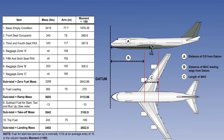We have looked at calculating the centre of gravity in relation to the aeroplane datum and now as a percentage of the Mean Aerodynamic Chord, both of which are used by aeroplane operators. It is important to remind ourselves that once the centre of gravity has been established, by whatever method, it must be checked against the certificated limits.